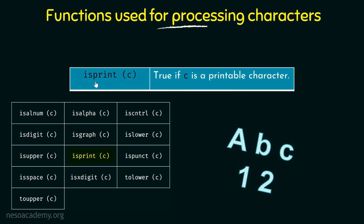Next we have ISPRINT, which checks if C is a printable character. If this character is a printable character — meaning anything that can be printed — then it returns true, and false otherwise.